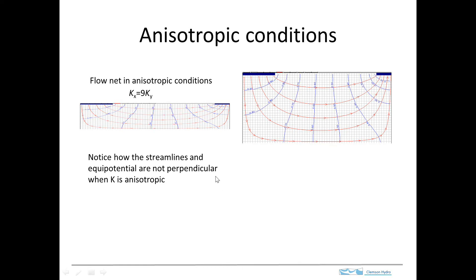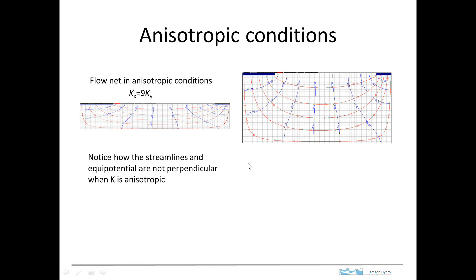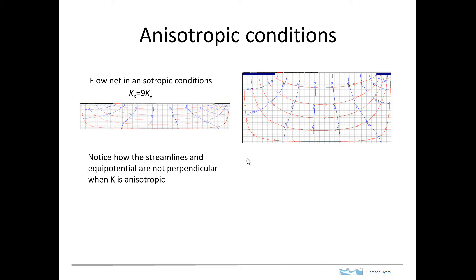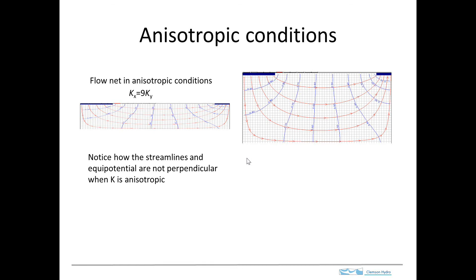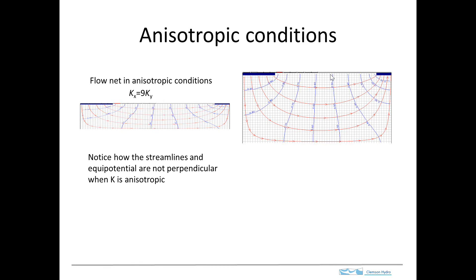It's important to recognize, though, that the assumptions that we've made about flow lines being perpendicular to equipotentials, that assumption requires that the hydraulic conductivity is isotropic. So this is something that I've mentioned in class whenever we've drawn these two lines as being perpendicular. I've mentioned this is for isotropic conditions.